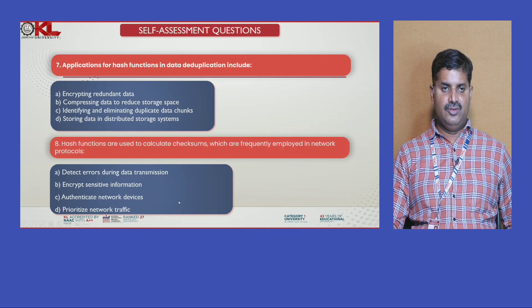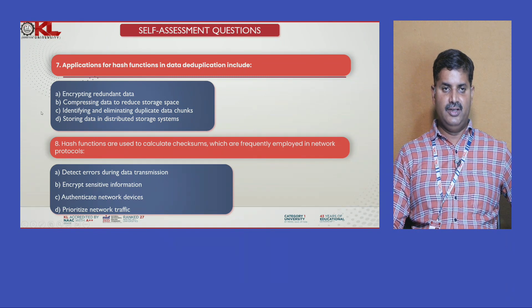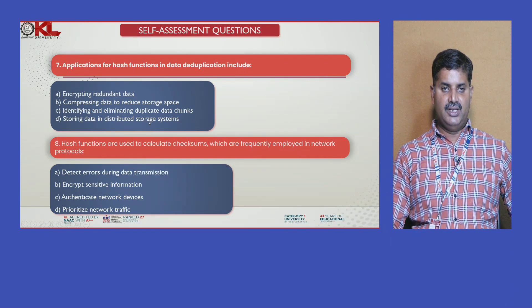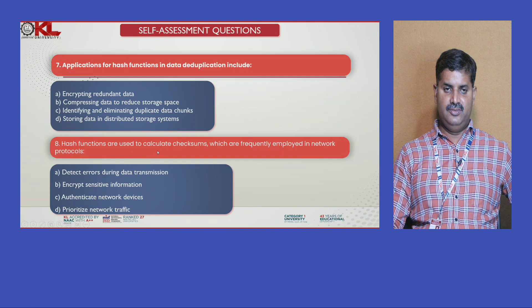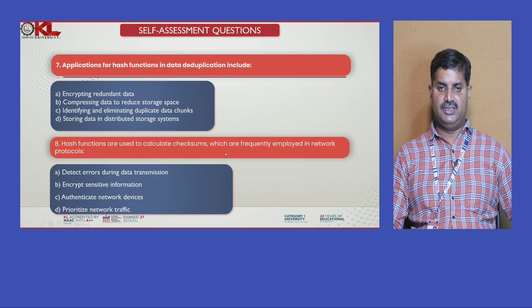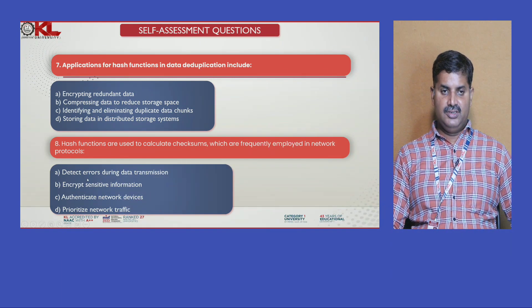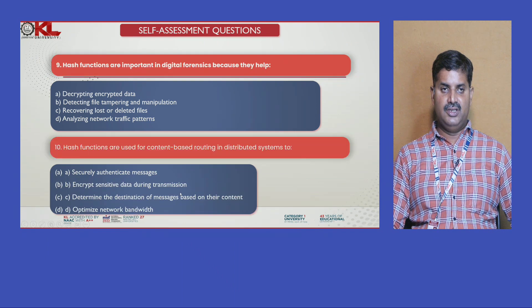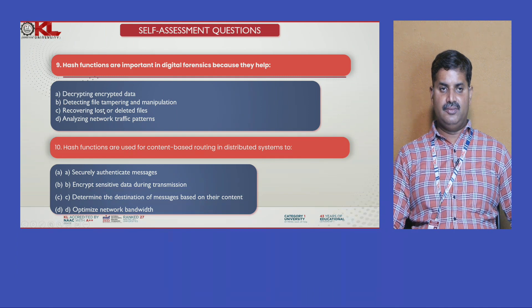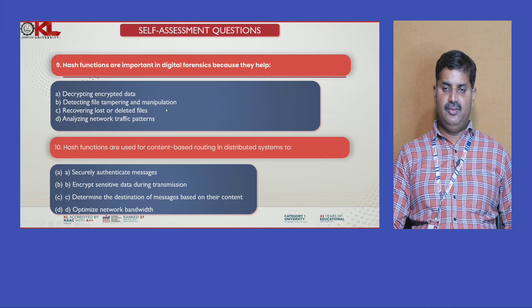The seventh and eighth questions: applications of hash functions for data deduplication include storing data in a distributed storage system and compressing data to reduce storage space. The eighth question: hash functions are used to calculate checksums, which are frequently employed in network protocols. Hash functions are important in digital forensics because they help detect file tampering and manipulation. Hash functions used for content-based routing in distributed systems help encrypt sensitive data during transmission and optimize network bandwidth.